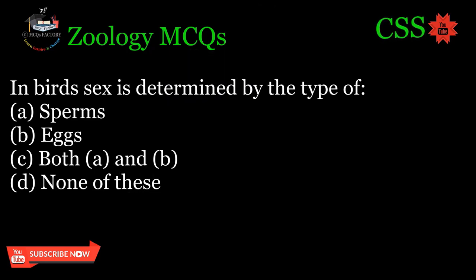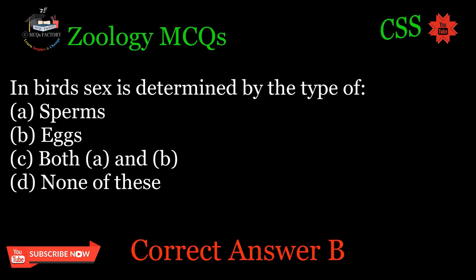In birds, sex is determined by the type of: A. Sperms, B. Eggs, C. Both A and B, D. None of these. Correct answer: B.